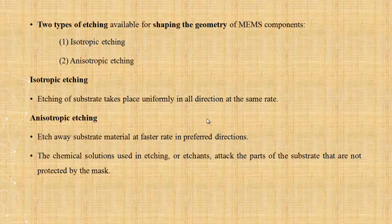Isotropic etching means uniform etching — the etch rate is the same in all directions. Anisotropic etching means etching preferentially in a particular direction.